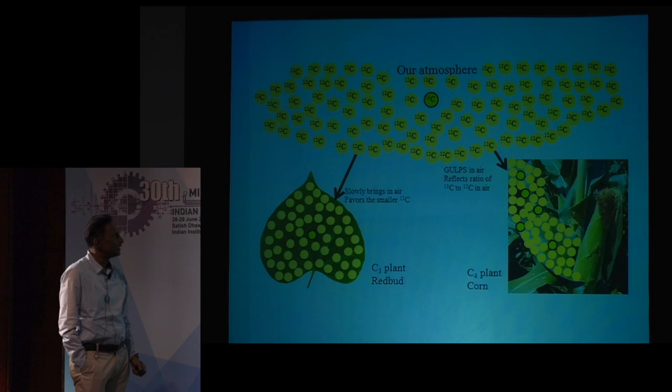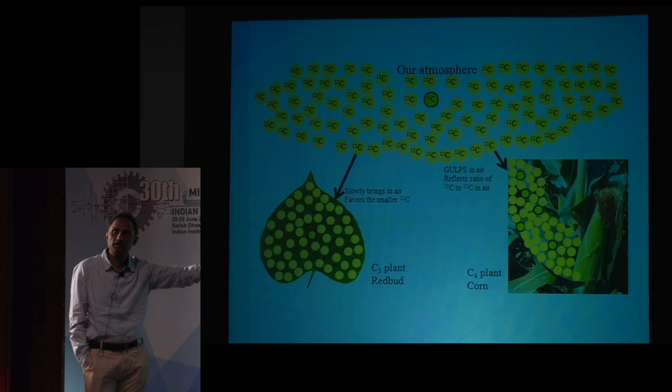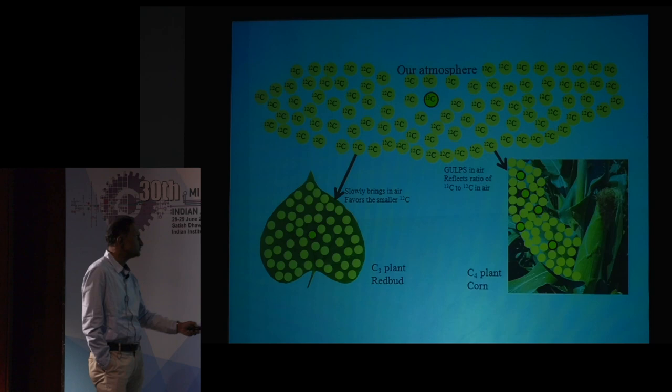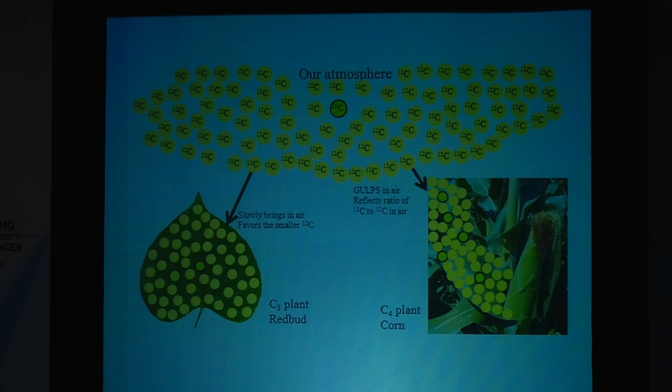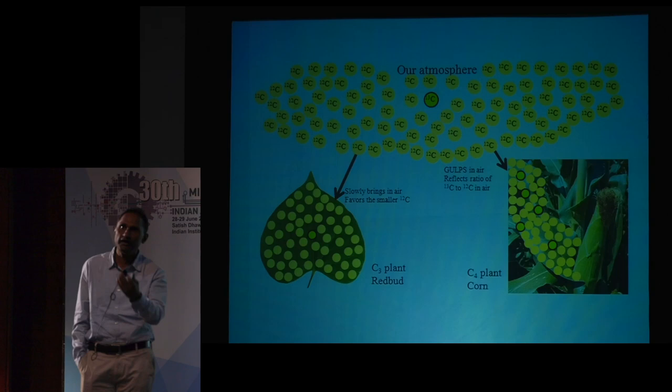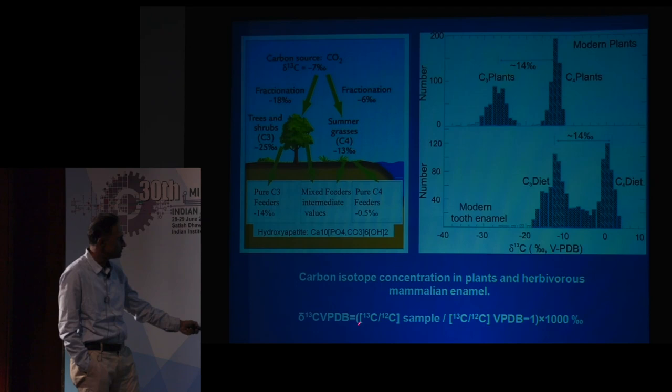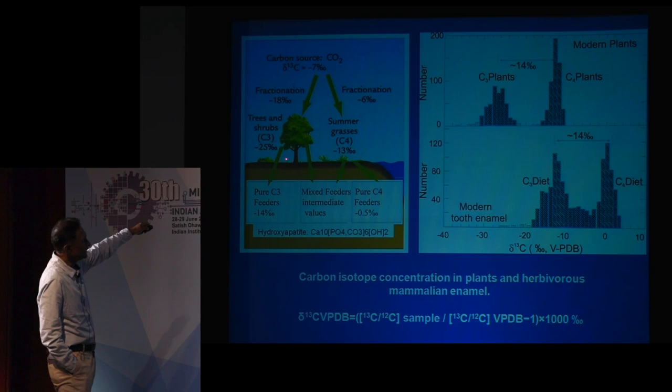From the atmosphere, C3 plants and C4 plants extract carbon dioxide for photosynthesis. C3 plants are pretty slow in consuming carbon dioxide, so C13 is less in C3 plants — these are trees and shrubs. C4 plants have more C13 because they gulp in carbon dioxide. The warm season grasses have more C13, so the delta C13 value varies between C3 and C4 plants.